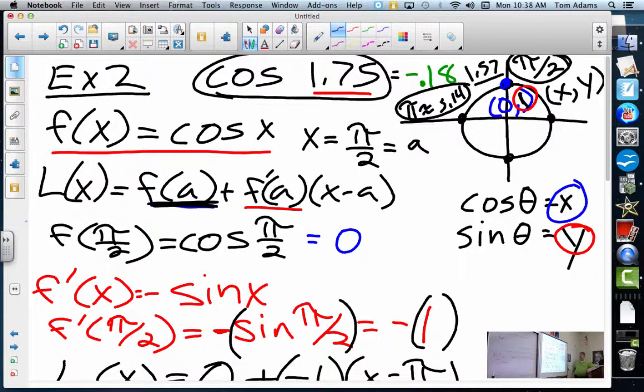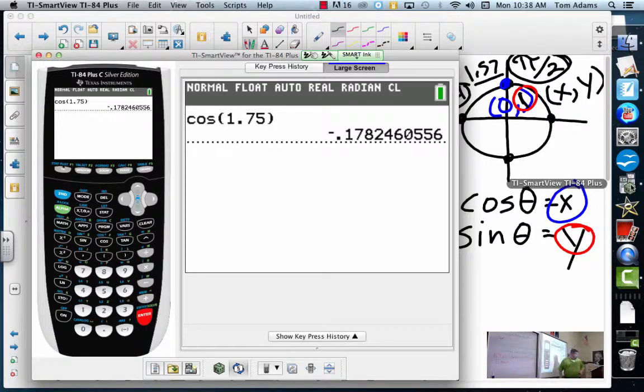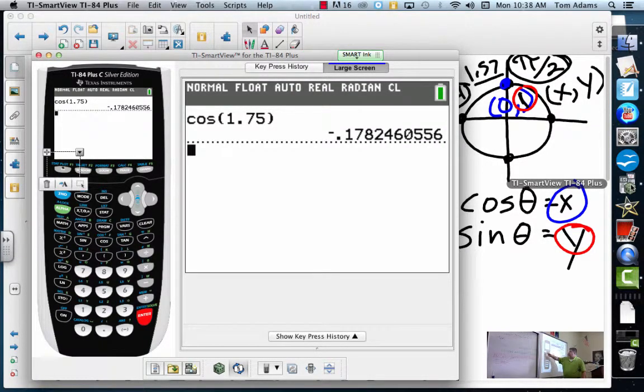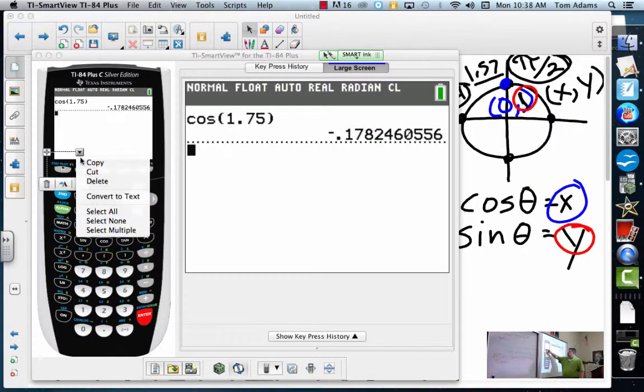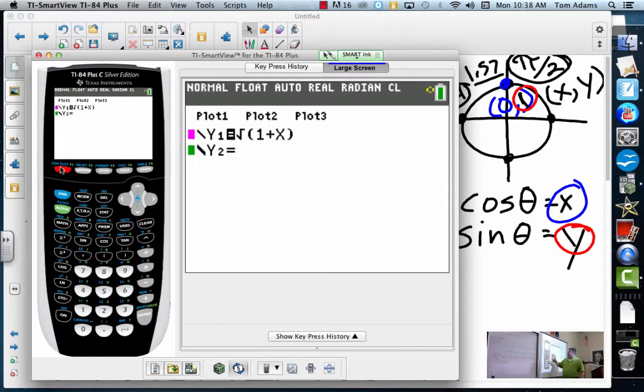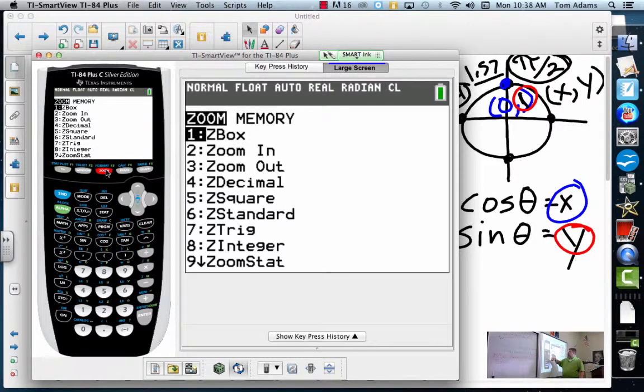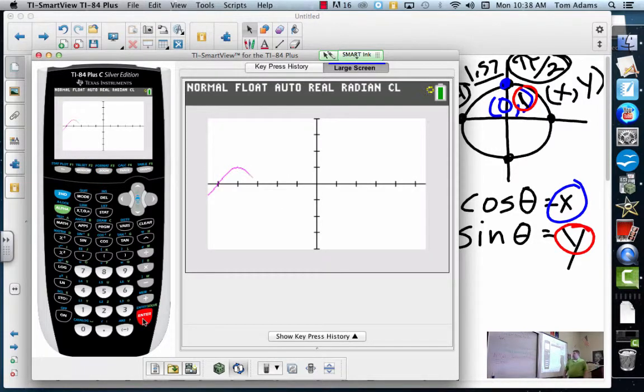Now what this looks like graphically, here's what we did graphically. Graphically, what I'm doing is I've got cosine of x, and let's just zoom out to a trig function. So this is cosine of x, and I want to know what that would look like at x equals 1.75.